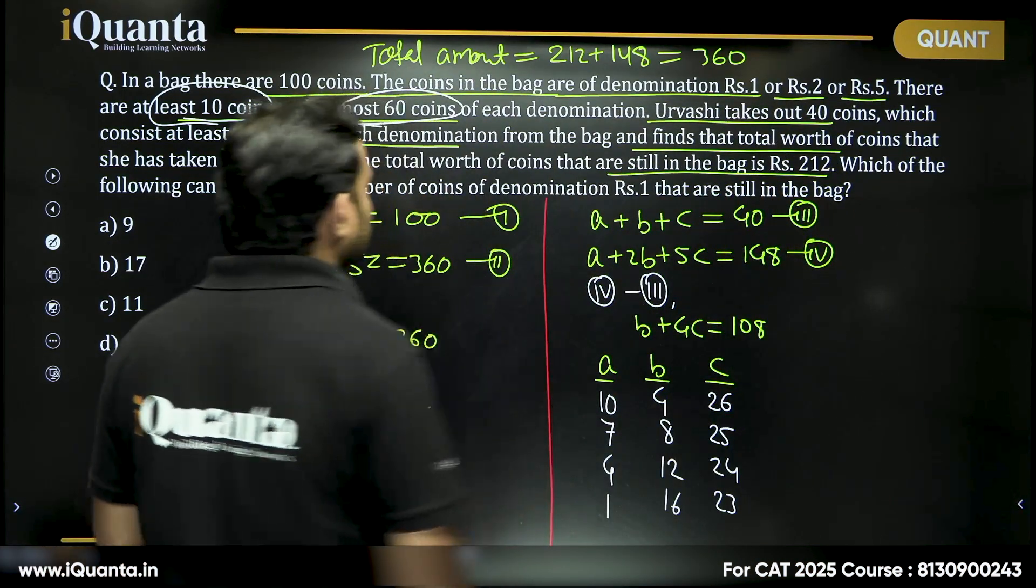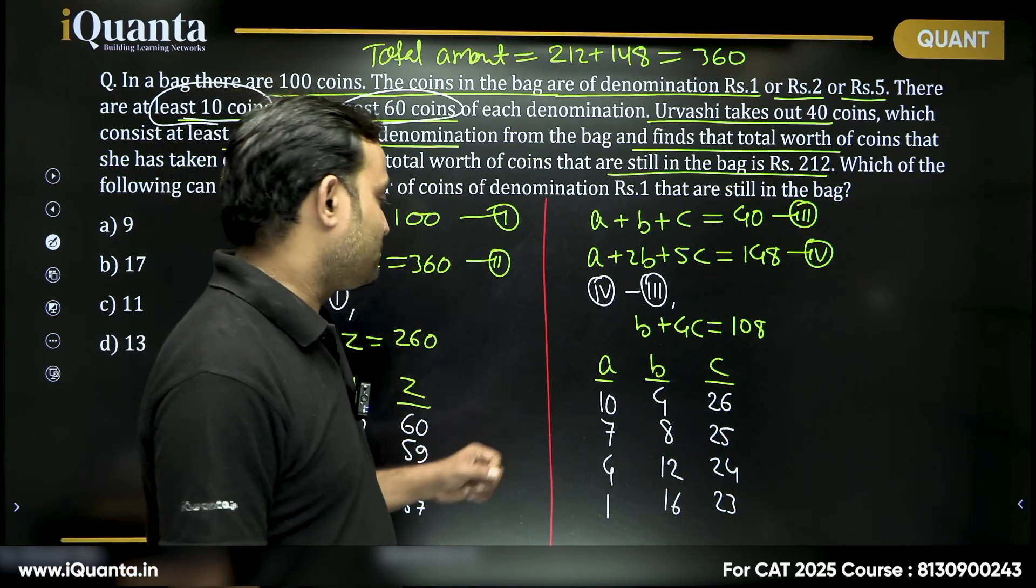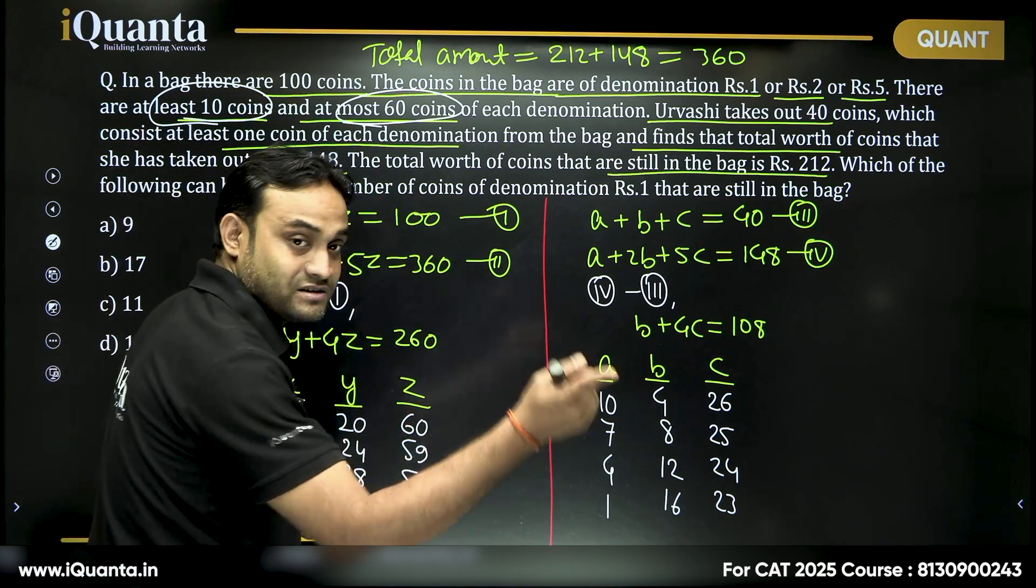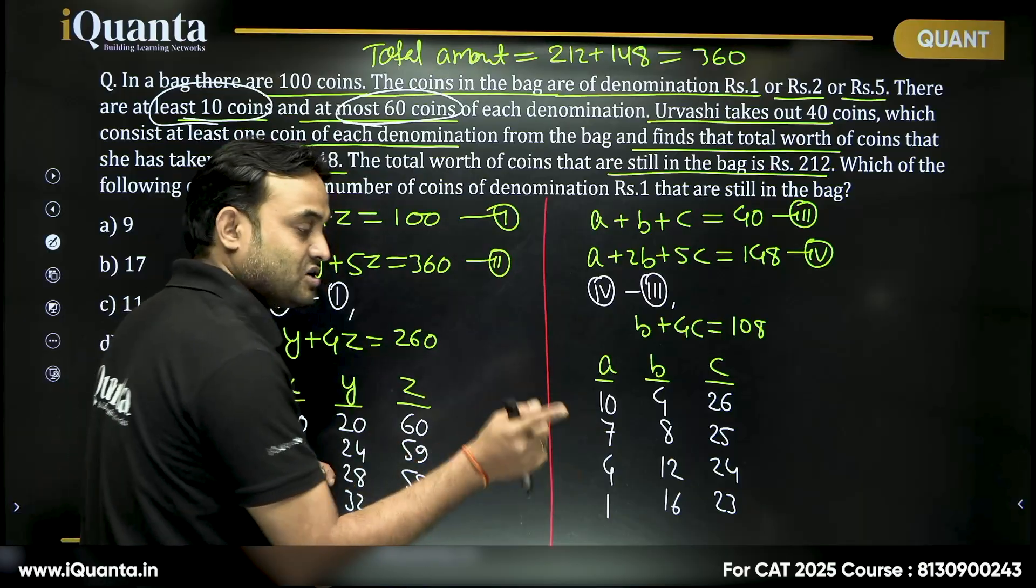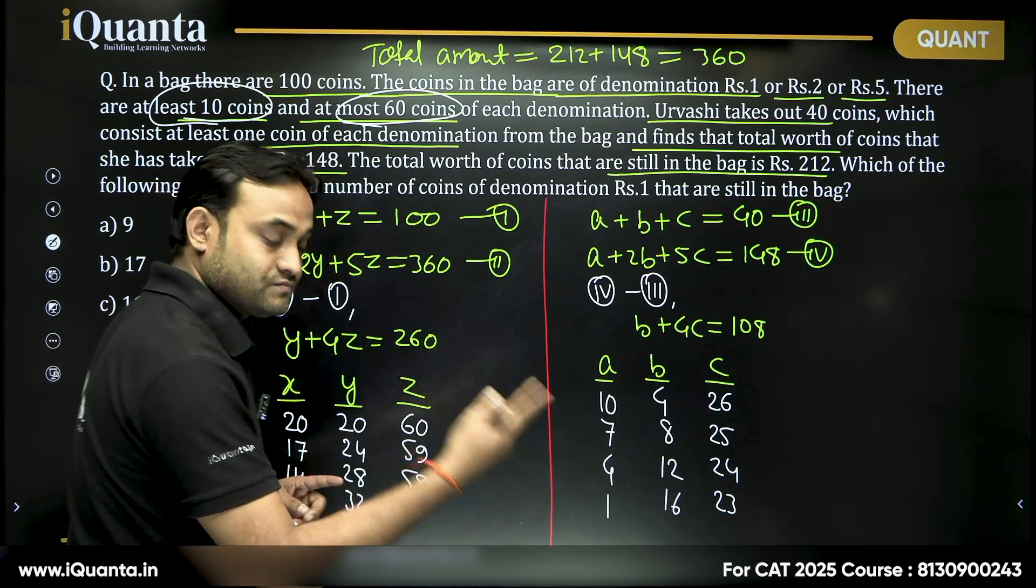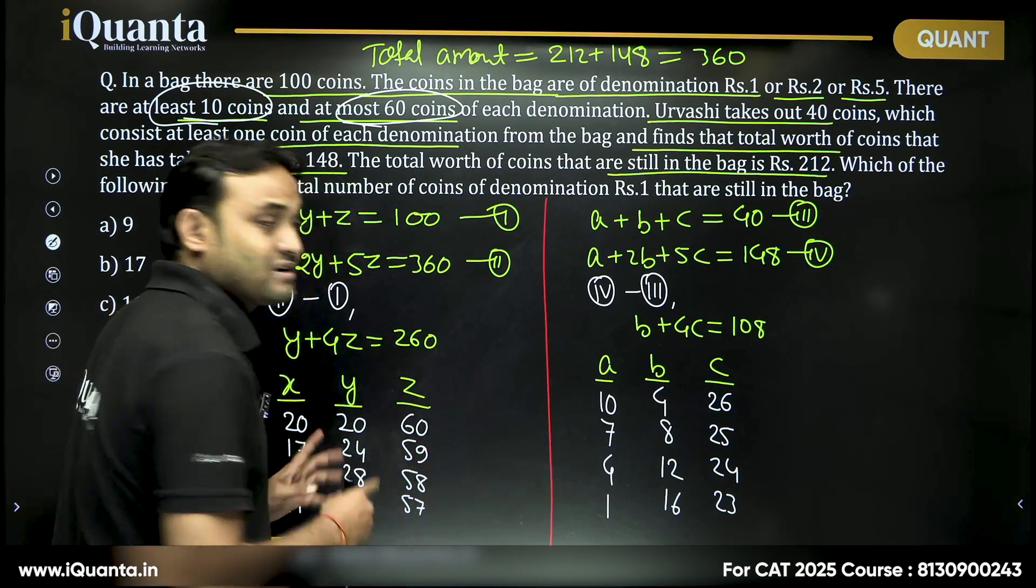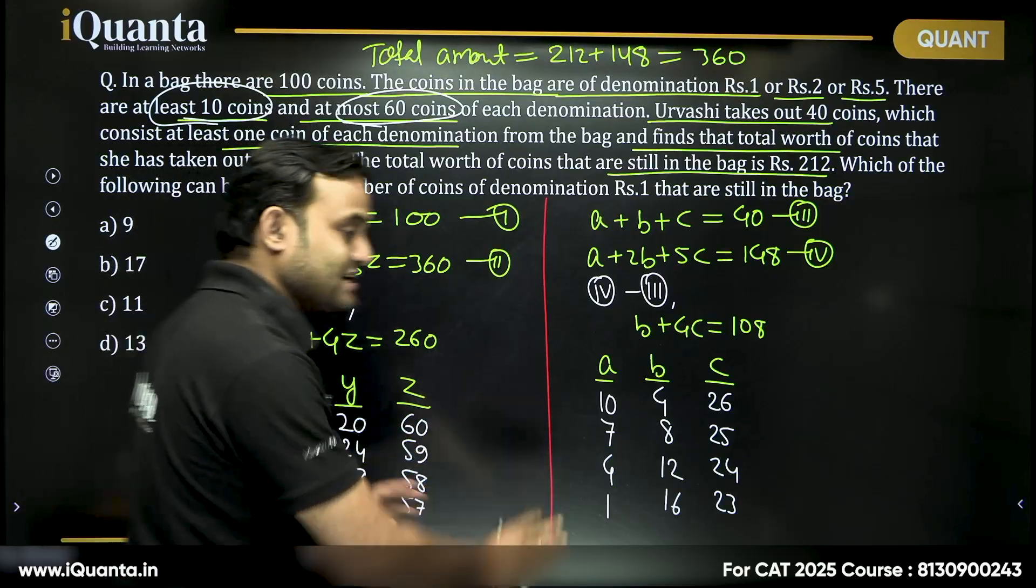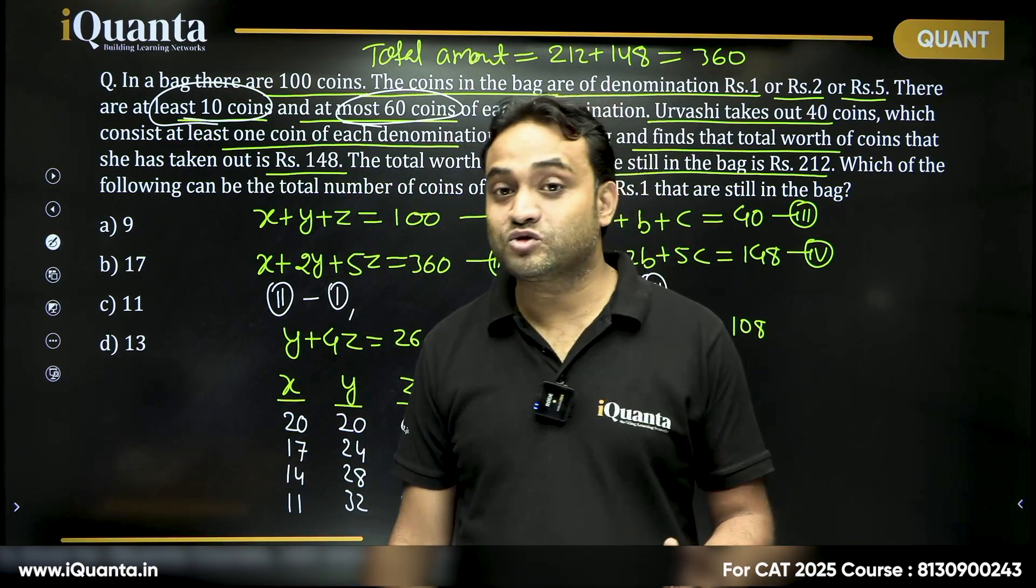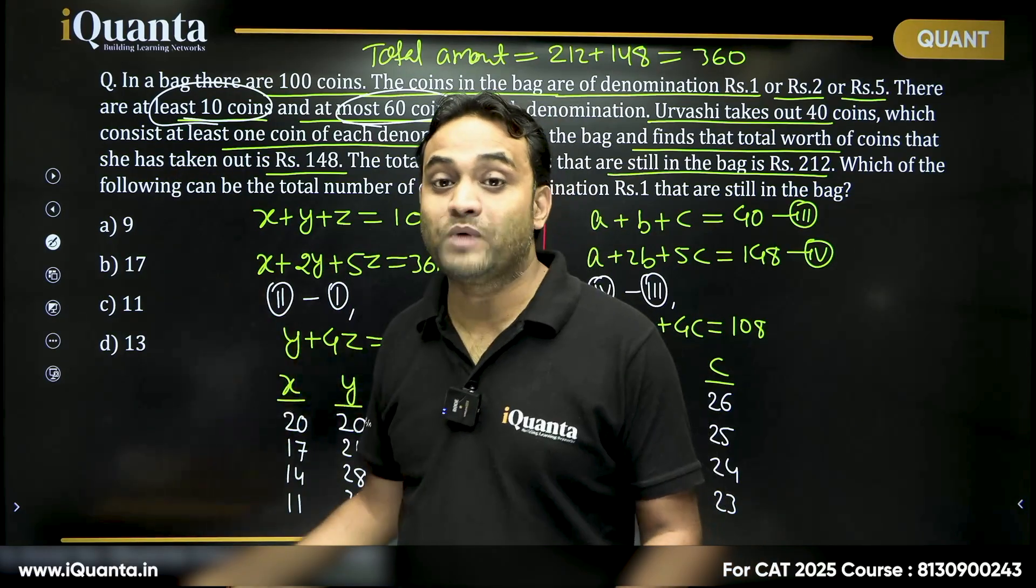What could be the total number of coins of denomination 1? See it could be 20 minus 10, 10, 20 minus 7, 13, 20 minus 4, 16, 20 minus 1, 19. Similarly in all the cases we will have to check but do we need to check like this or should we go by the options?